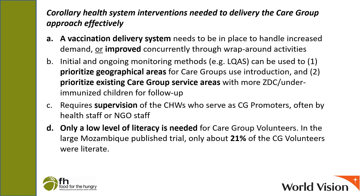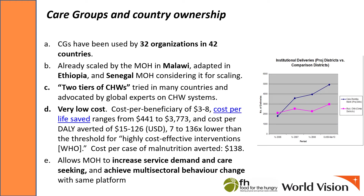This approach requires supervision of the CHWs or NCG promoters, often by health staff or NGO staff. It only requires a low level of literacy amongst the care group volunteers. In the large Mozambique published trial, only 20% of the care group volunteers were literate, which can be a huge advantage in many fragile settings. The care group approach has been used by 32 organizations in 42 countries, with many of those applications being to increase demand for vaccinations and other services, demonstrating its wide applicability. The model has been scaled in Malawi by the Ministry of Health, adapted in Ethiopia, and there's interest in Senegal in scaling it. The principle of having two tiers of community health workers has been tried successfully in several countries, most notably Ethiopia, and is advocated by global experts on CHW systems such as Dr. Henry Perry.